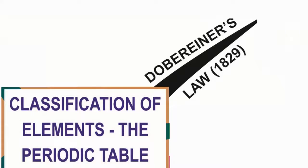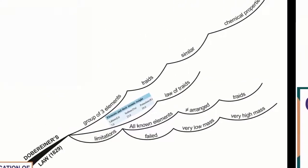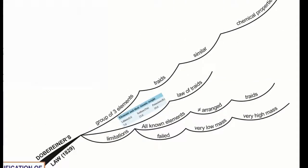Let us see our first branch, Dobereiner's law. The keywords used in this branch are 1829, group of three elements, triads, similar chemical properties, a table, law of triads, limitations, all known elements, not arranged, triads, failed, very low mass, very high mass.